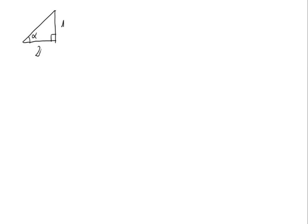Given the right triangle we see on the screen — it is a right triangle because of this 90-degree angle right here — we are asked to calculate the trigonometric functions of alpha. That means we have to calculate the sine of alpha, the cosine of alpha, the tangent of alpha, the cosecant of alpha, the secant of alpha, and the cotangent of alpha.